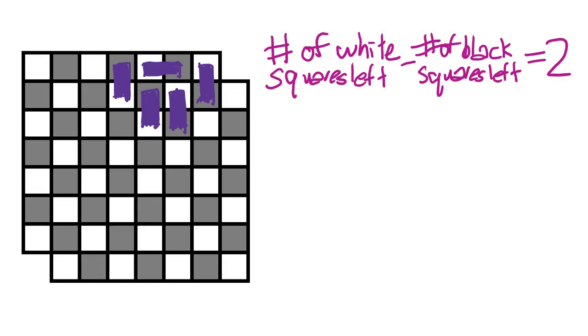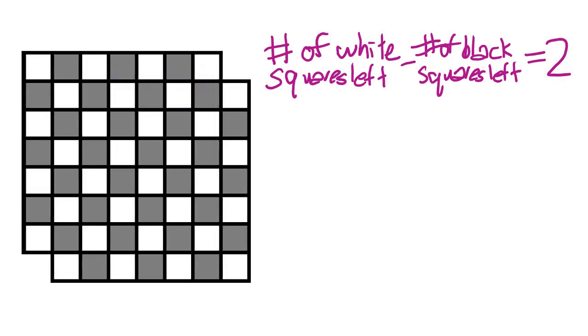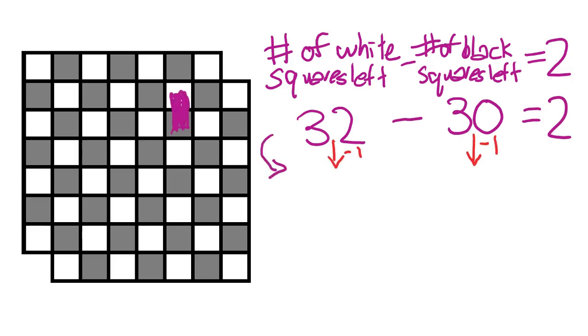Then, the relevant invariant is that there are always two more uncovered white squares than uncovered black squares. At the beginning, there are 32 white squares and 30 black squares, so there are two more white squares than black squares. Then, at every step of the process, every time we place down a domino, we always cover exactly one black square and one white square. So this difference is still two.